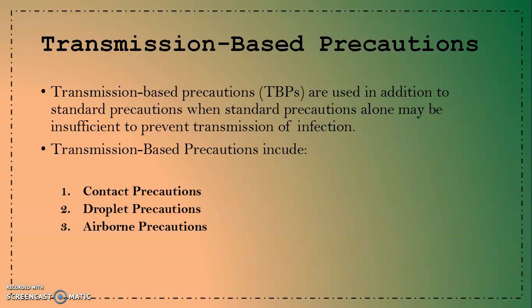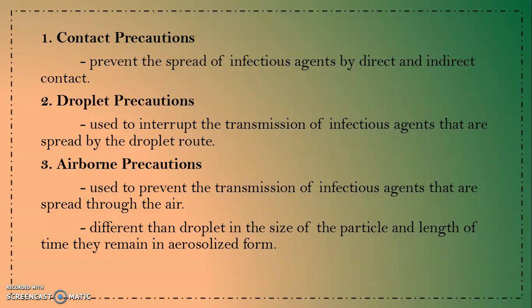Standard precautions, when applied correctly and consistently, will decrease the chance of transmitting the majority of infections. However, there are other situations that require targeted precautions to protect the patient, healthcare provider, visitor, and the environment. These additional precautions are known as transmission-based precautions, which include contact precautions, droplet precautions, and airborne precautions.